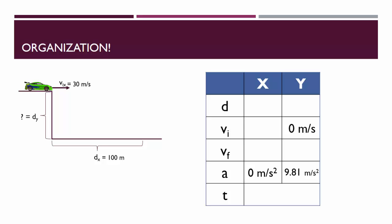From this specific problem, we know that the initial horizontal velocity is 30 meters per second, and we know that the horizontal displacement, or the range, is 100 meters.